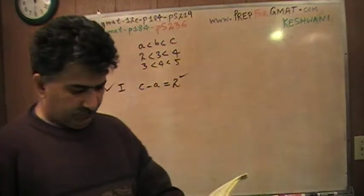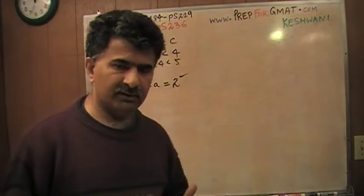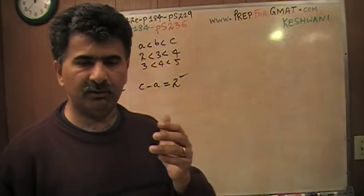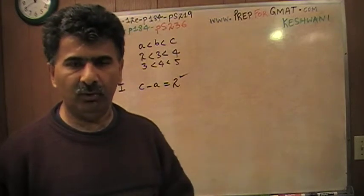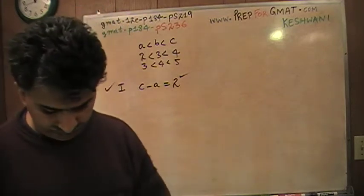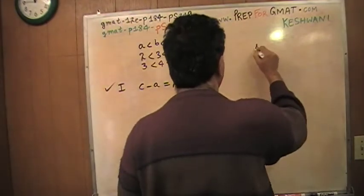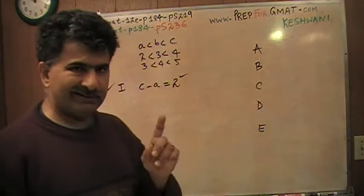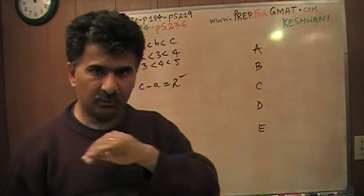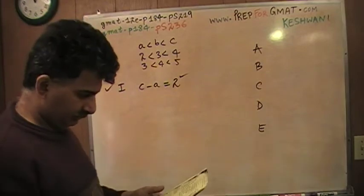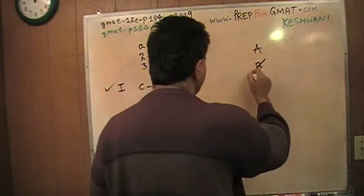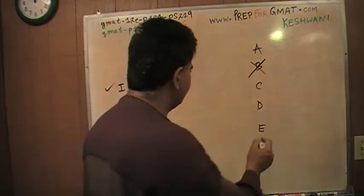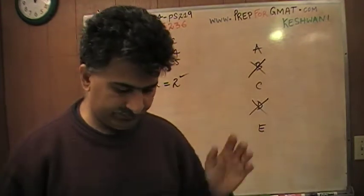Let's look at the answer choices. Let's see what we can knock out. This is how I do it. Don't do all three statements together. Just do one statement at a time. Start with the statement that you find the easiest one. It doesn't have to be the first statement. Figure out whether it's right or wrong, and knock out the impossible answers next. Anything that does not have Roman numeral 1 in it, I'm going to cross it out, because 1 works. B says 2 only, so that's out. C says 1 and 2 only, it has 1 in it. D says 2 and 3, so that's not going to work.